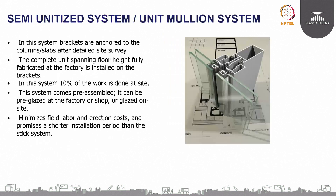In the semi-unitized system, the anchors and brackets are pre-installed at site on the slabs or supporting main structure, while the whole panel — the mullions and transoms — is assembled at the factory and installed at site. The glass is installed at site on these panels, meaning only about 10 percent of work is done at site. Since all panels are assembled at the factory, quality can be achieved, though glass installation at site still makes quality difficult to maintain.